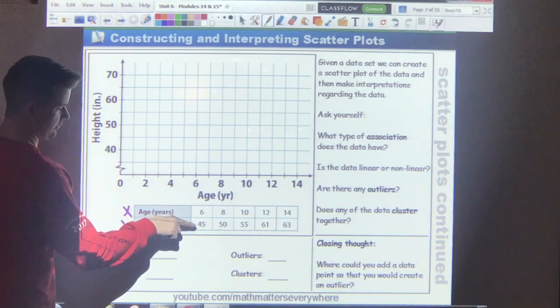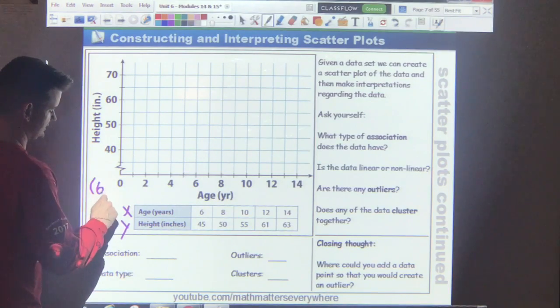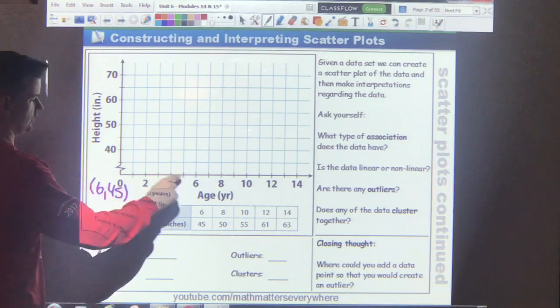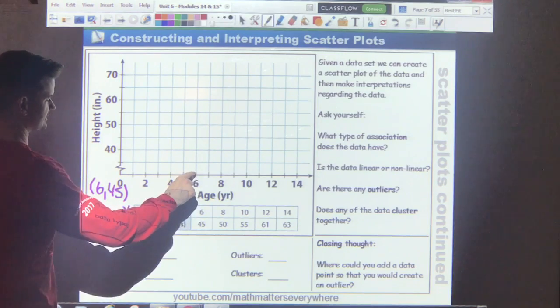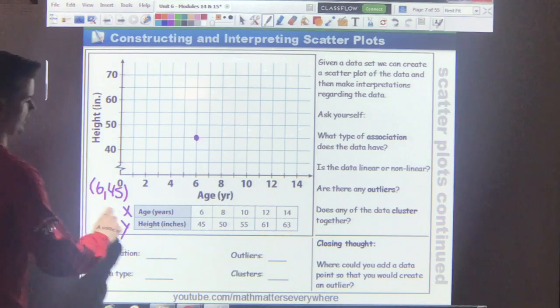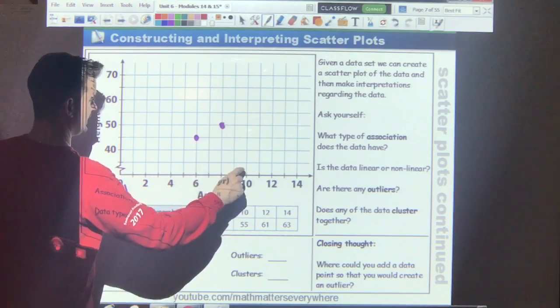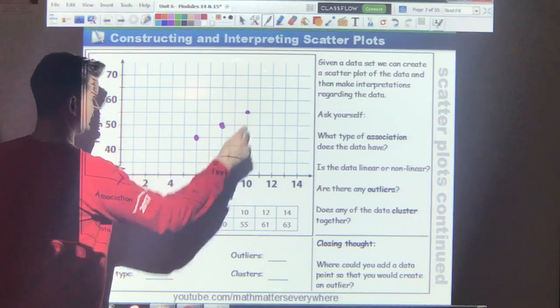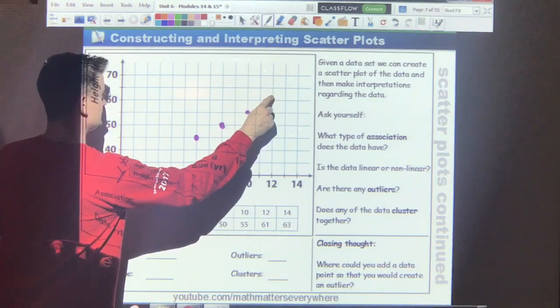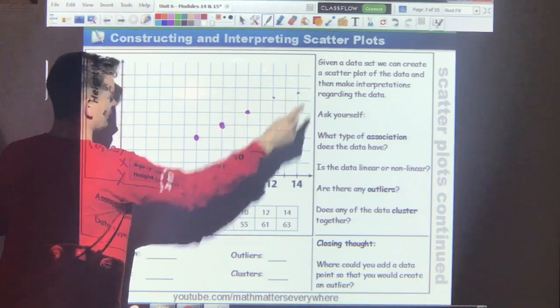We're going to graph x, y. Pretend that these are coordinate pairs. So we have really 6, 45. We know how to graph that. We go to 6 on the x. We go to 45 on the y. And we're going to graph the rest of these points. 8, 50. 10, 55. 12, 61 is right about there. And 14, 63 is right about there.